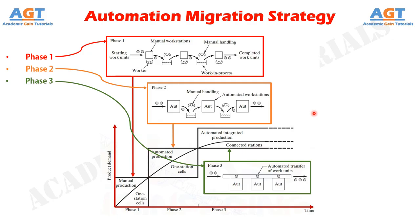There are several advantages of such a strategy. It allows introduction of the new product in the shortest possible time, since production cells based on manual workstations are the easiest to design and implement. It allows automation to be introduced gradually, in planned phases, as demand for the product grows, engineering changes in the product are made, and time is provided to do a thorough design job on the automated manufacturing system. It avoids the commitment to a high level of automation from the start, because there is always a risk that demand for the product will not justify it.